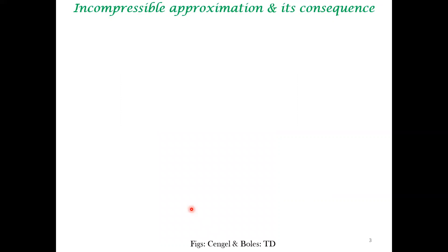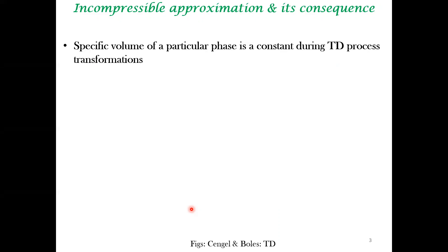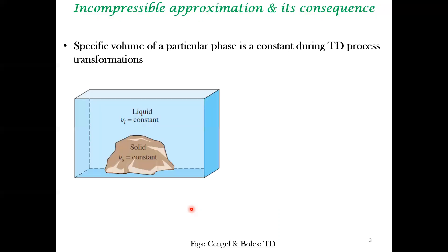In this lecture, we move away from ideal and real gases to solids and liquids. To analyze solids and liquids, we use the important approximation that they are incompressible — meaning their specific volume does not change during the thermodynamic processes we consider. For example, when a solid melts into a liquid, we assume the specific volume of the solid phase is constant, which is different from the specific volume of the liquid phase, which is also constant.